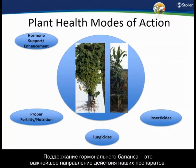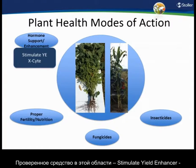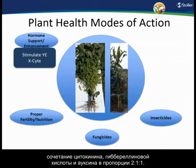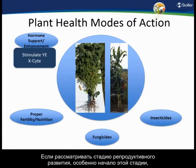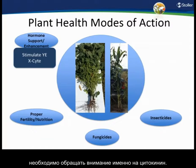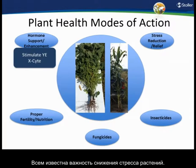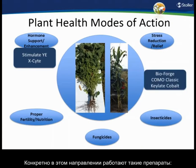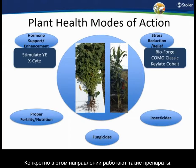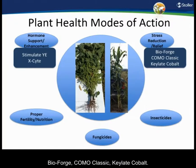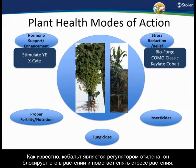Hormone support and enhancement is the first area we really look at. In this arena we have our standby Stimulate Yield Enhancer — a 2:1:1 ratio of cytokinin, gibberellic acid, and auxin. During reproductive stages, cytokinin is predominantly the hormone we're really focused on. Our Excite product is a cytokinin-based product that uses just one hormone to enhance the plant at this stage. We also have Bioforge, Como Classic, and Chelate Cobalt for stress reduction, as cobalt is an ethylene regulator within the plant.